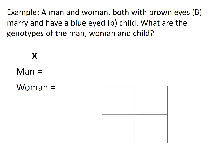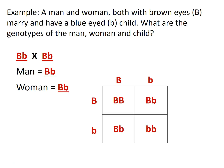Here's another practice question. A man and a woman, both with brown eyes, marry and have a blue-eyed child. What are the genotypes of the man, woman, and child? Well, the child has blue eyes so they must be bb. And since the man and woman both had to contribute a little b to that offspring, they must both be heterozygous — Bb. Setting up the Punnett square confirms this, with bb appearing as the offspring.